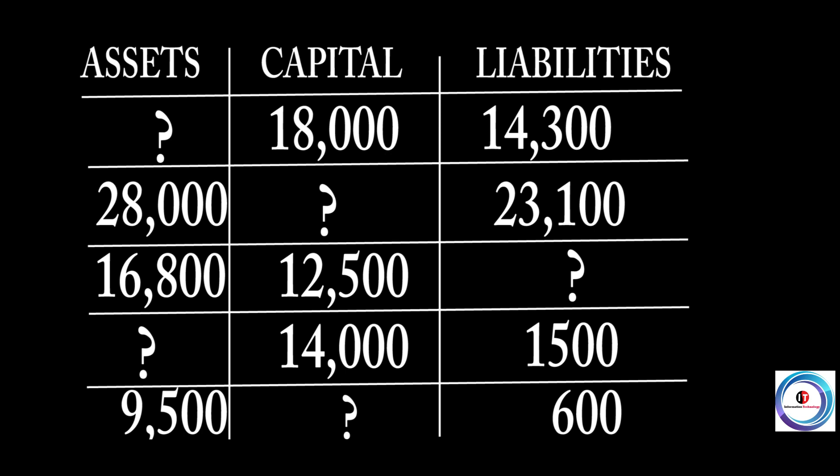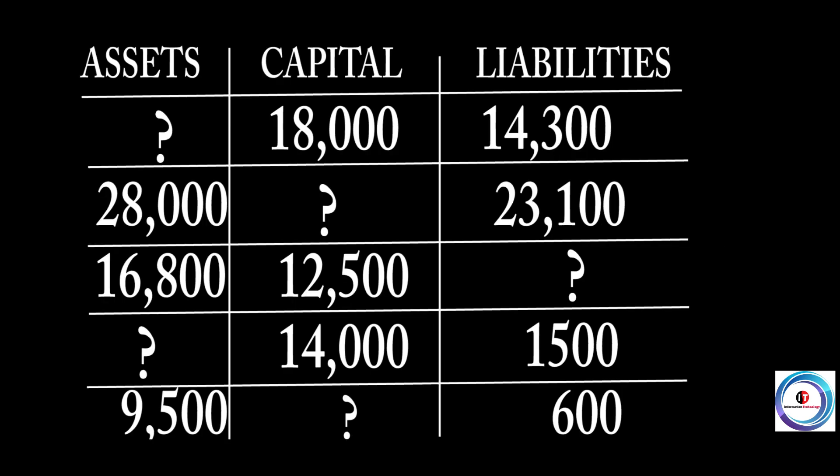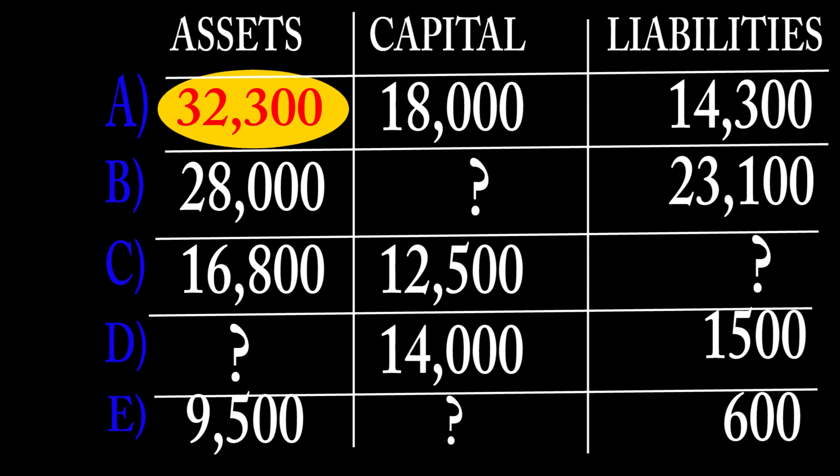So Part A is the asset. Come back to the formula: Asset equals capital plus liability, that is C plus L. I don't have the asset. So if I don't have the asset, I have capital which is 18,000 plus liability which is 14,300. So your asset equals when you add the two: 32,300.